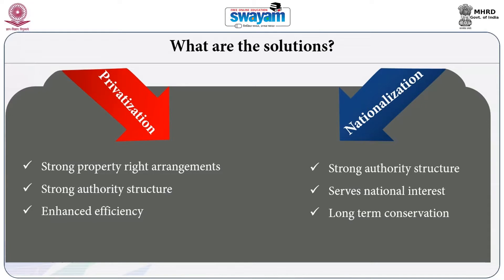When each household increases their cattle to gain individual benefits, it ultimately leads to collective disaster — the grazing land simply cannot accommodate beyond a certain number of cattle. Ultimately the grazing land will be denuded, and no grass will be available for grazing. Households lose the benefit from the commons that they would have had if they had coordinated and devised institutions to decide how many cattle could be sent to the grazing land. Hardin concludes that all common pool resources are bound to be degraded.